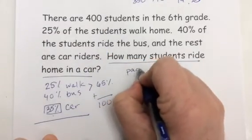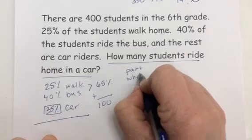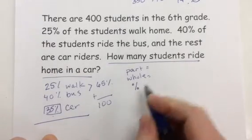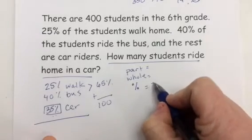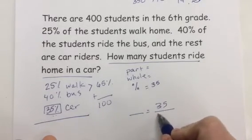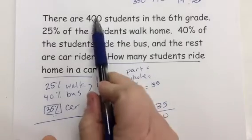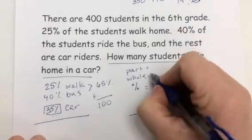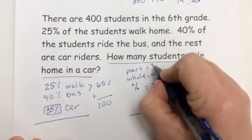So I need the part, the whole, and my percent. Well 35 is the percent I'm working with, and it always goes over 100. This 400, is that the part of the students that ride home in a car, or is that the whole school? Well 400 represents the whole school. So what we're going to be finding is the part.